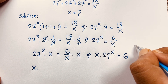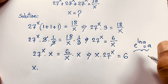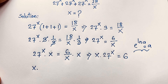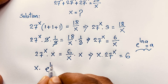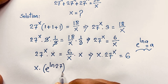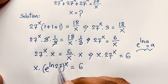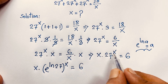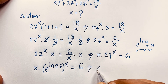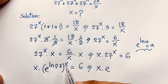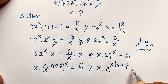Now I use the identity e^(ln a) = a. I want to apply this formula here using Lambert's W function. So I rewrite 27^x as e^(x·ln27), and the equation becomes x · e^(x·ln27) = 6.